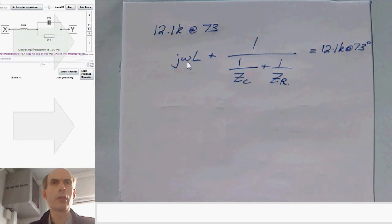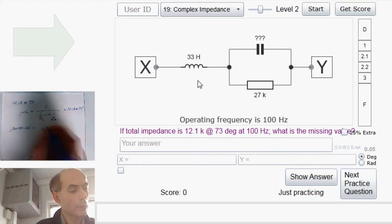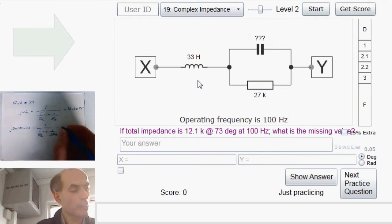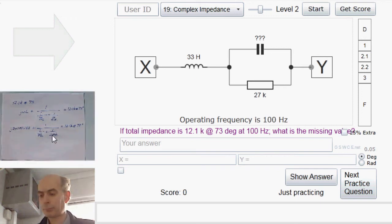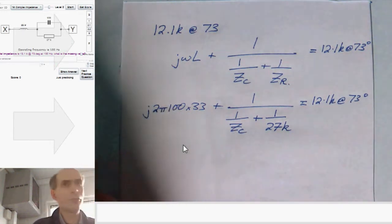So we could substitute in for those three things straight away. It would be J times 2 pi times 100 times 33 plus 1 over 1 over ZC plus 1 over ZR, 27k. So that's the sum that we're trying to do, and we're trying to work out the unknown impedance of this capacitor here. Probably best to do that in stages.